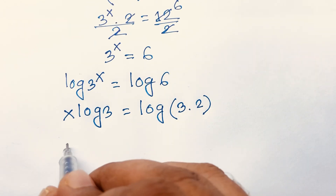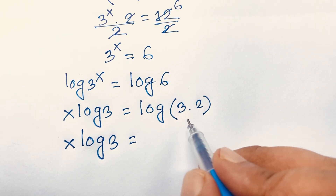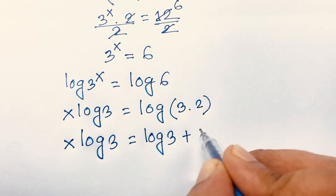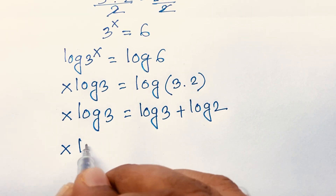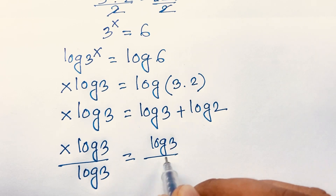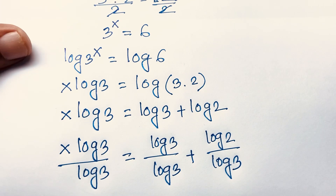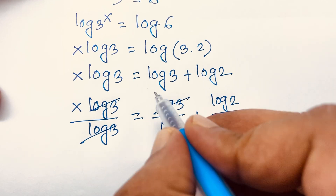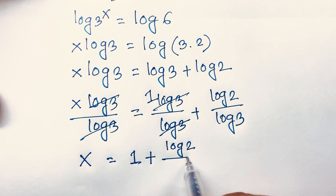Since log 6 equals log(3 × 2), by logarithm rules this becomes log 3 plus log 2. So the equation is x·log3 = log3 + log2. Dividing both sides by log 3, the log3/log3 terms cancel, giving x is equal to 1 plus log 2 over log 3.